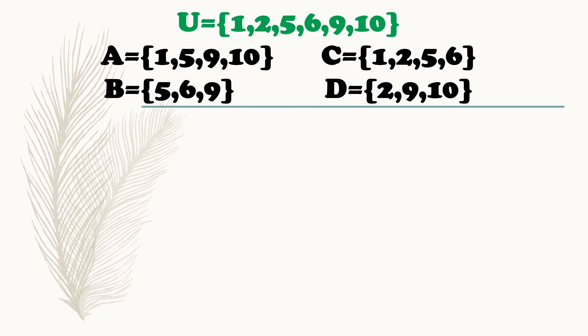Example: the universal set is equal to {1, 2, 5, 6, 9, 10}. Again, we have four different sets given. Set A is equal to {1, 5, 9, 10}. Set B is equal to {5, 6, 9}. Set C is equal to {1, 2, 5, 6}. And set D is equal to {2, 9, 10}.